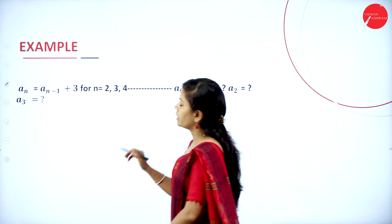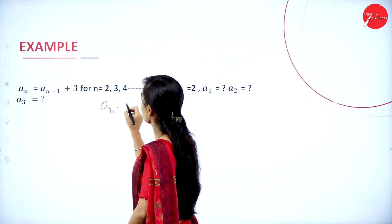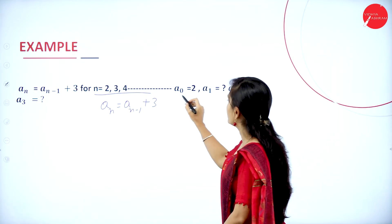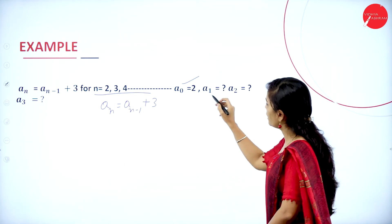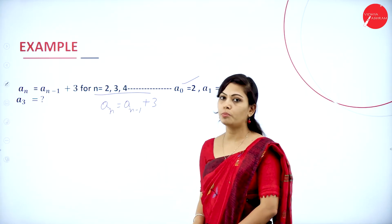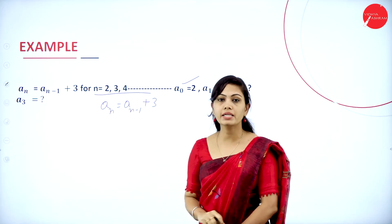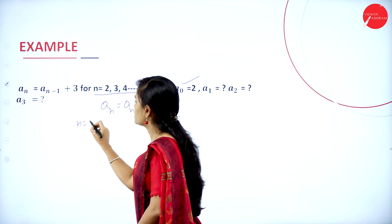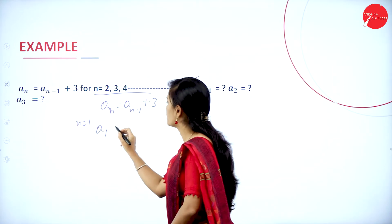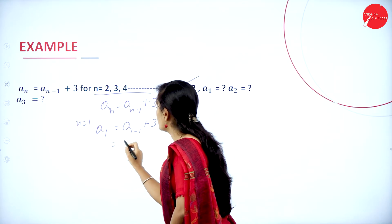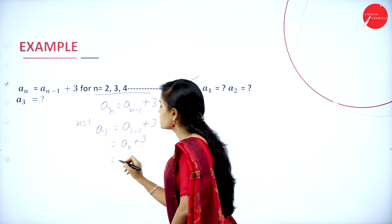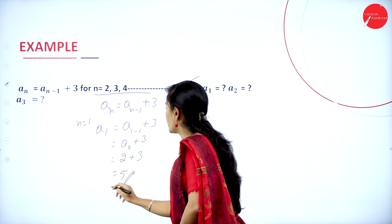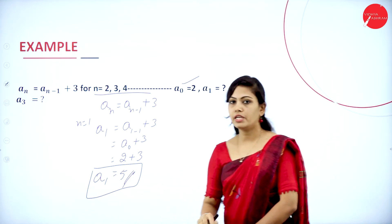The next problem: statement an = an-1 + 3, for n = 2, 3, 4. Find a1, a2, and a3. Substituting n = 1: a1 = a0 + 3. The value of a0 is 2, so 2 + 3 = 5. Therefore a1 = 5.